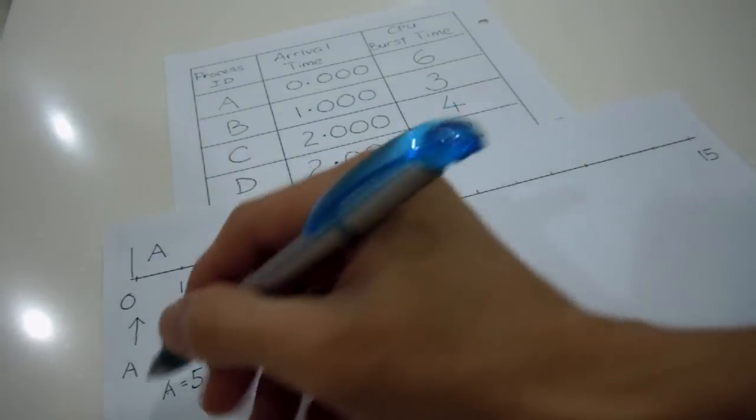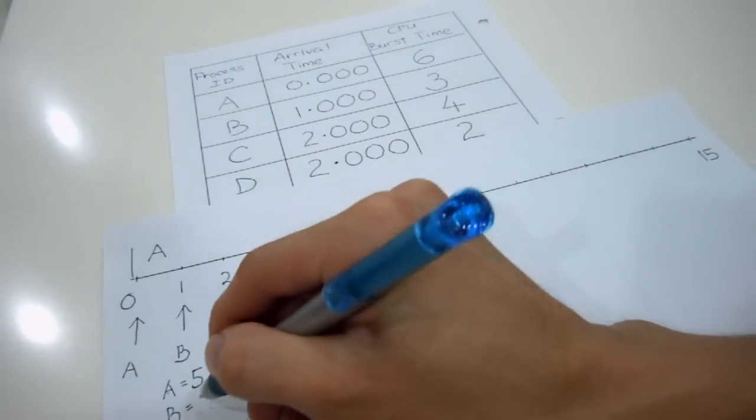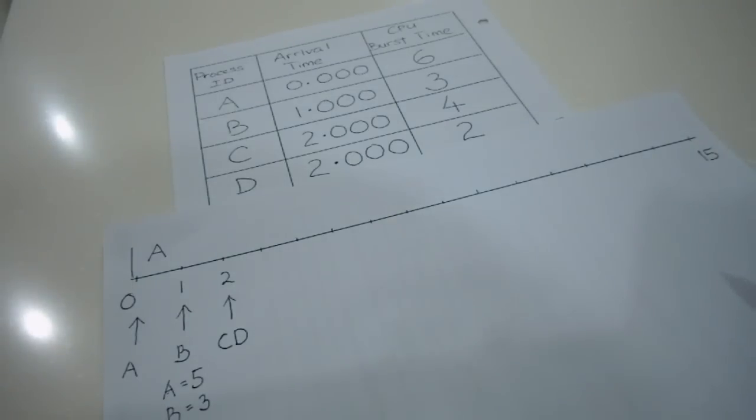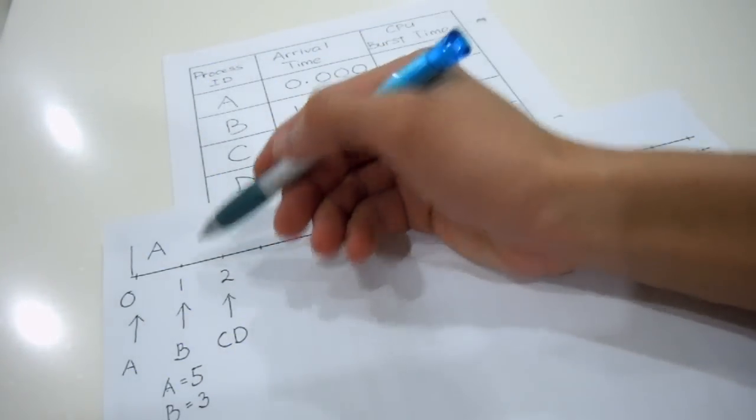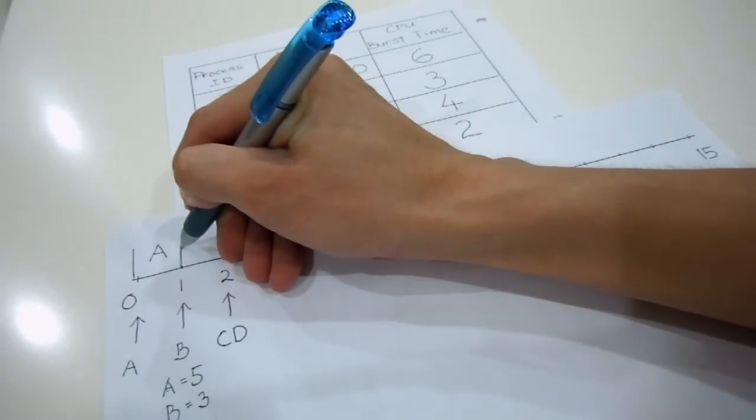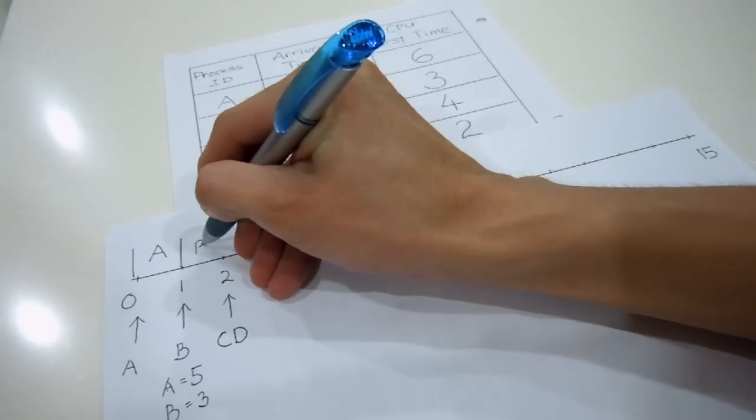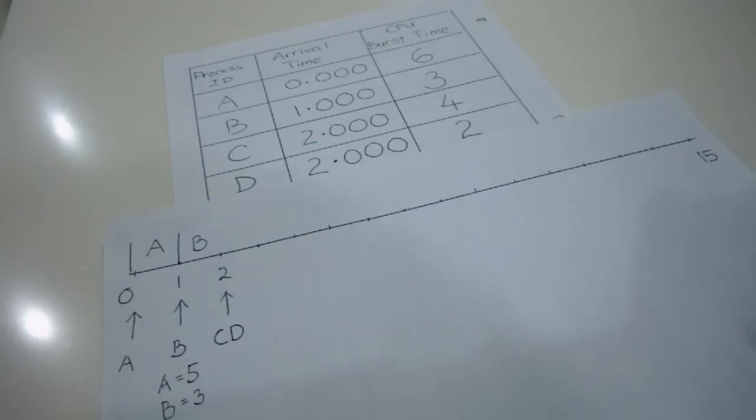So for this case, my A at time 1 will be equivalent to how many left? Because I initially have 6 and I already ran 1, so I will be leaving 5 here. And my B, of course, I've just started with 3. So between 5 and 3, who is having a lower CPU burst time? Of course, B is having a lower burst time, so it will actually interrupt the process A and go into the execution. So I have no choice but to let B go in. So A will be pending until it comes to its turn.